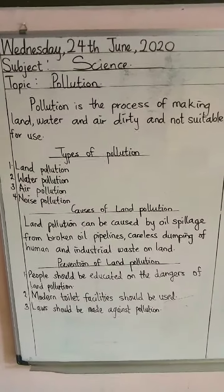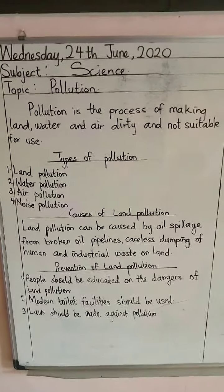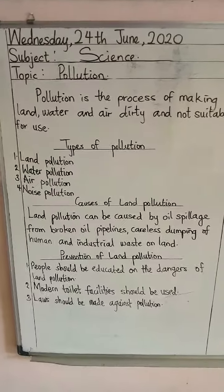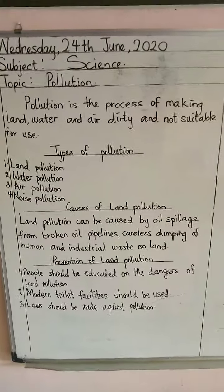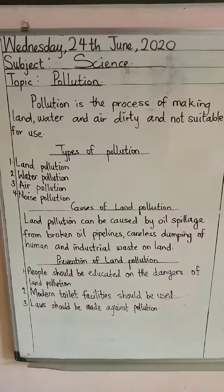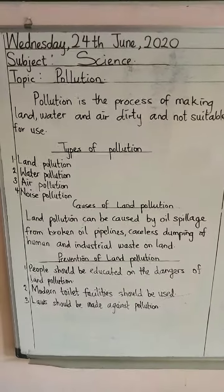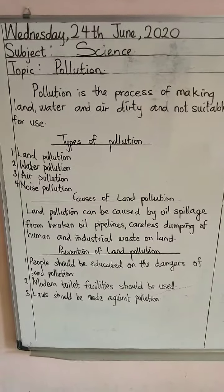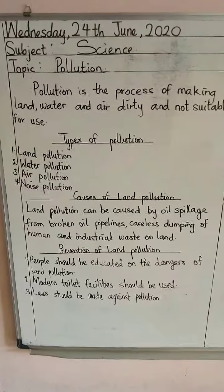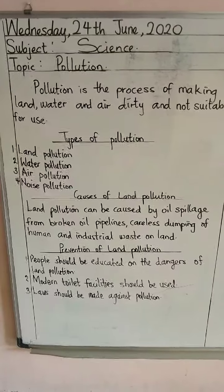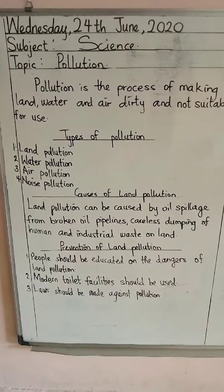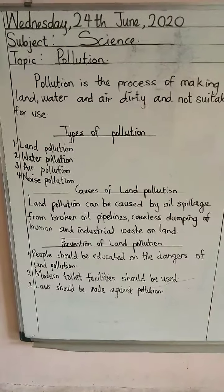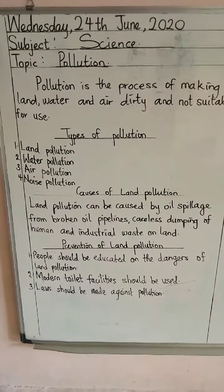Remember, pollution is the process of making land, water and earth dirty and not suitable for use. If you make your environment not suitable for use, it simply means you have polluted your environment. Our types are land pollution, water pollution, air pollution, and noise pollution.